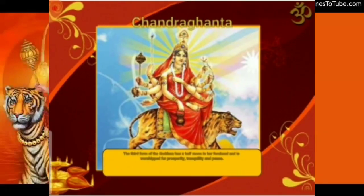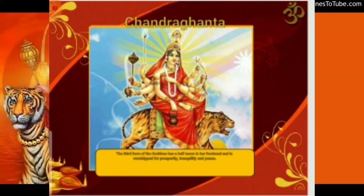The third form of Goddess Durga is Chandraghanta, who has a half moon on her forehead and is worshipped for prosperity and peace.